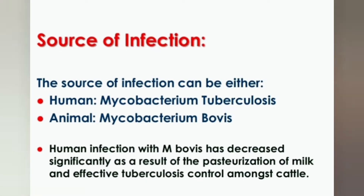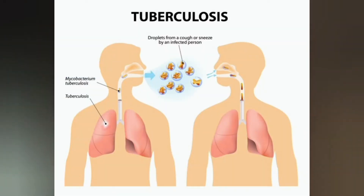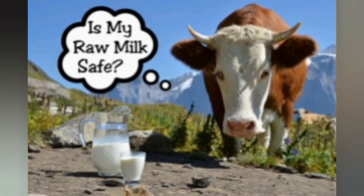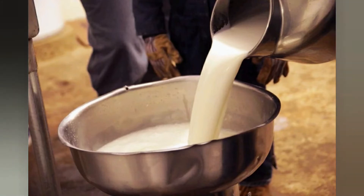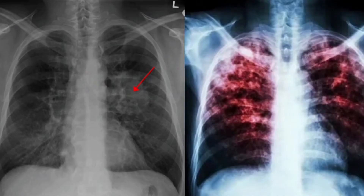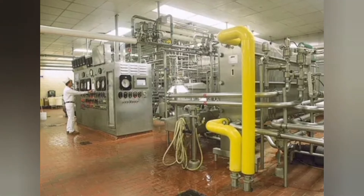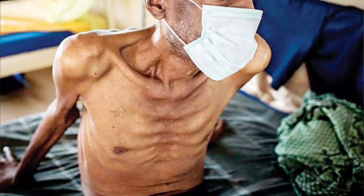The source of tuberculosis is divided into human source and bovine source. The human source refers to human tuberculosis. The bovine source refers to bovine tuberculosis. To control the bovine source, we use the pasteurization method.